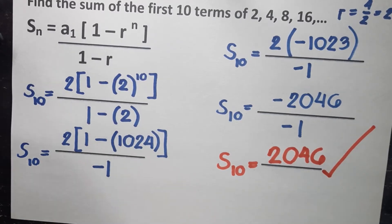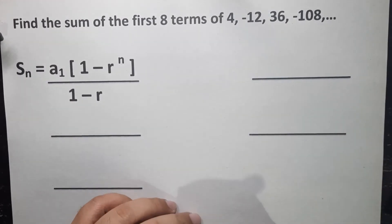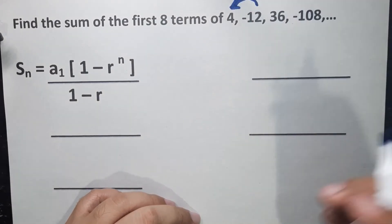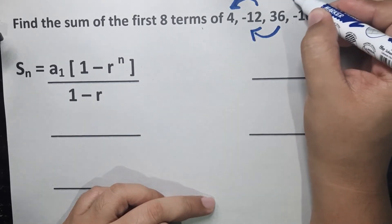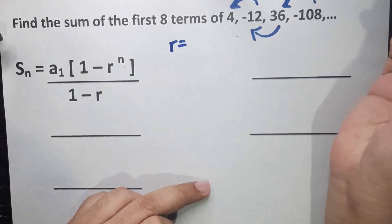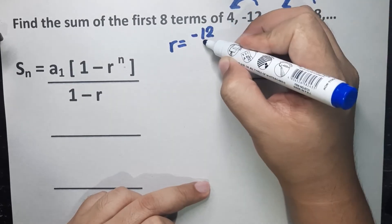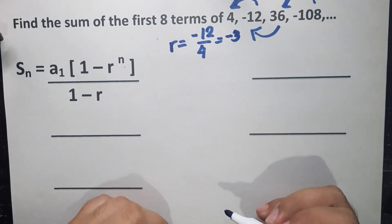For our second example, find the sum of the first 8 terms of 4, negative 12, positive 36, and negative 108. First step is to determine the common ratio. Selecting negative 12 as the current term divided by the previous term 4, we get negative 12 divided by 4, which gives us a common ratio of negative 3.